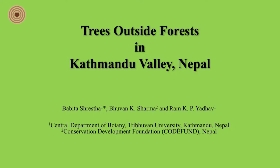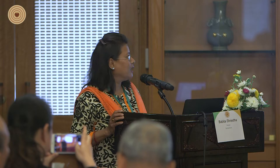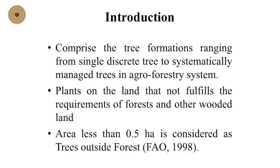First, what is trees outside forest? To some people this may be a new topic. Trees outside forest comprises tree formations ranging from a single discrete tree to systematically managed trees in agroforestry systems — plants on land that does not fulfill the requirement for forest and other wooded land. An area less than 0.5 hectare is considered as trees outside forest, according to FAO 1998.